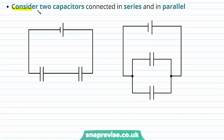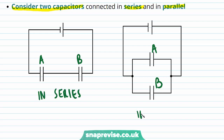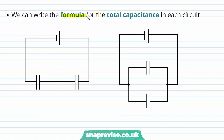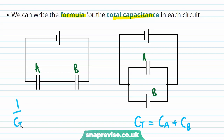Let's consider two capacitors connected in series and in parallel. So here we have two capacitors, A and B — on the left we've connected them in series, and on the right we've connected them in parallel. We can write the formula for the total capacitance in each circuit. For capacitors connected in parallel, the total capacitance is equal to the sum of the individual capacitances, whereas for capacitors in series, the reciprocal of the total capacitance is equal to the sum of the reciprocals of the individual capacitances.